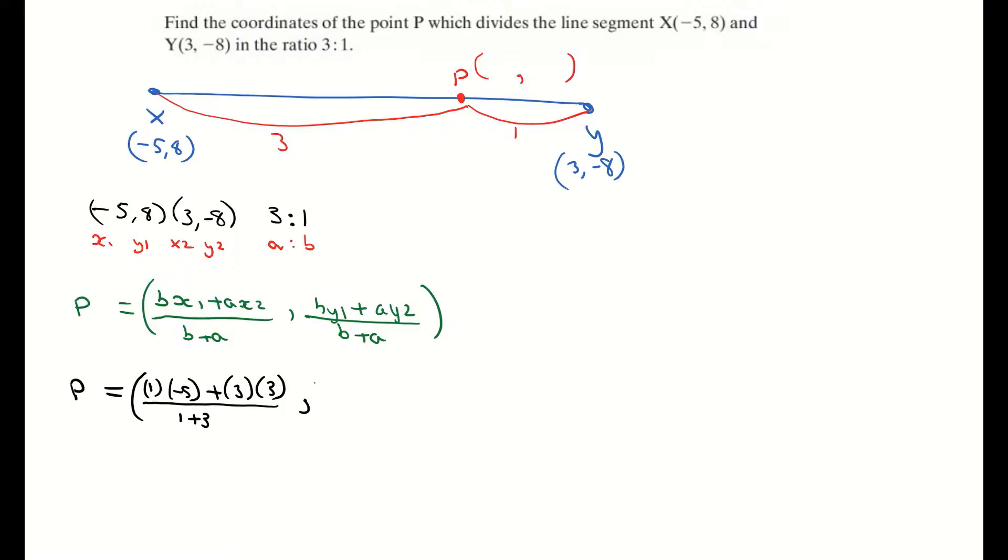Then I'm multiplying the B by the Y1, which is 1 by 8. Plus my A, which is 3 times my Y2, which is (-8). That is all divided by once again, B plus A, which is 1 plus 3.